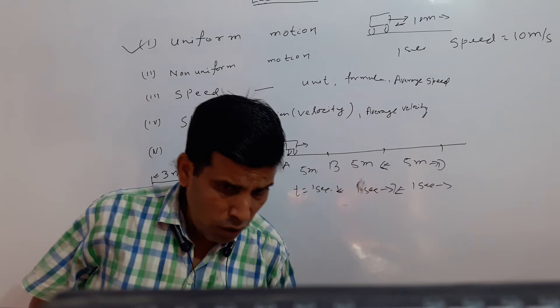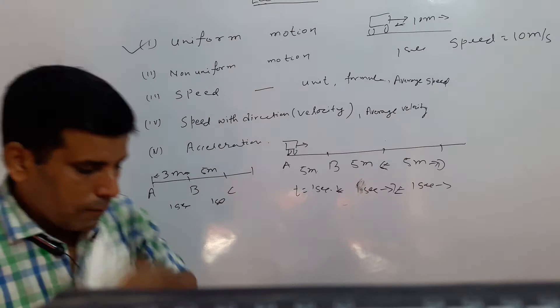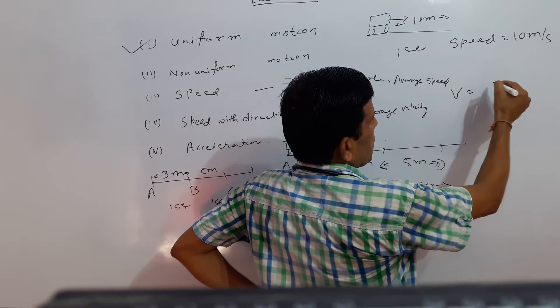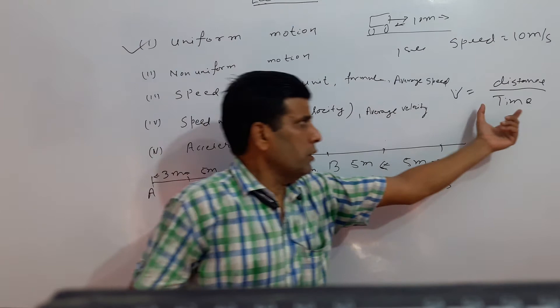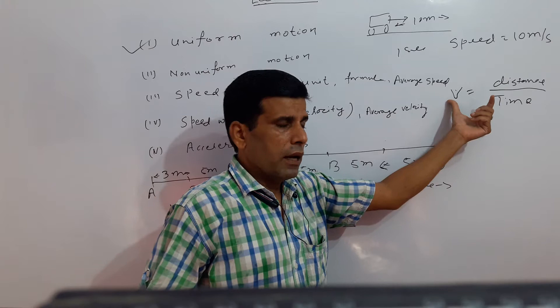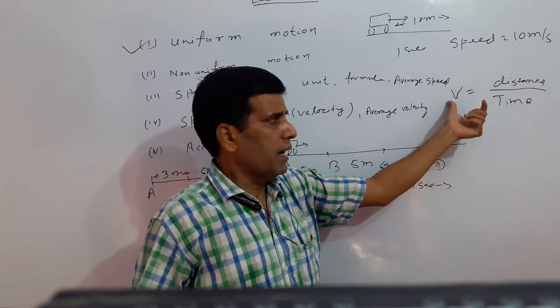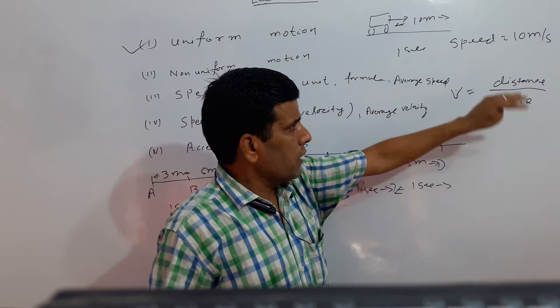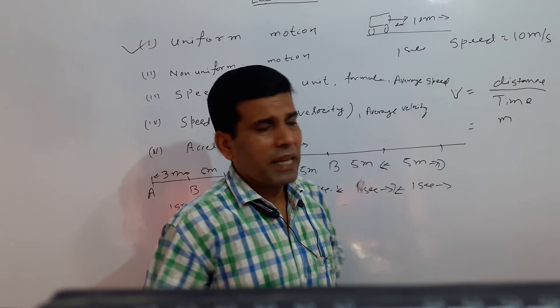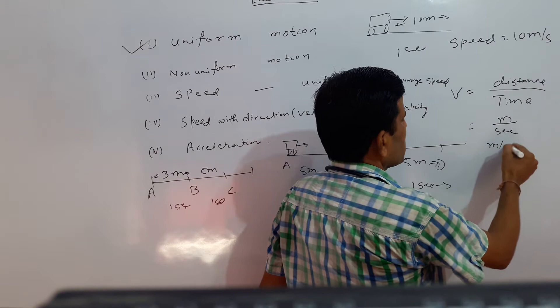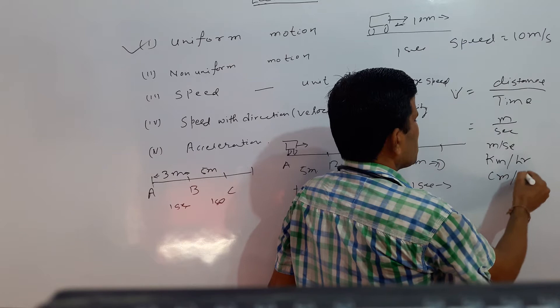What is the formula for speed? Speed equals distance divided by time. The unit of distance is meters, the unit of time is seconds, so the unit of speed is meters per second — which can also be kilometers per hour or centimeters per second. These are the units of speed.